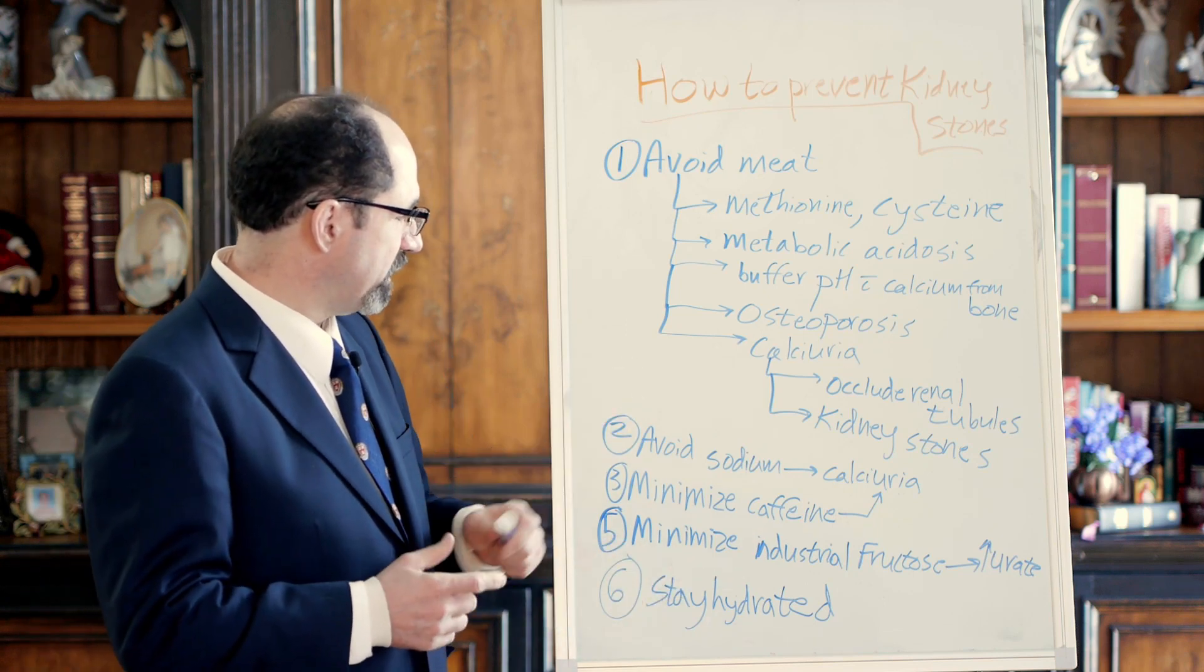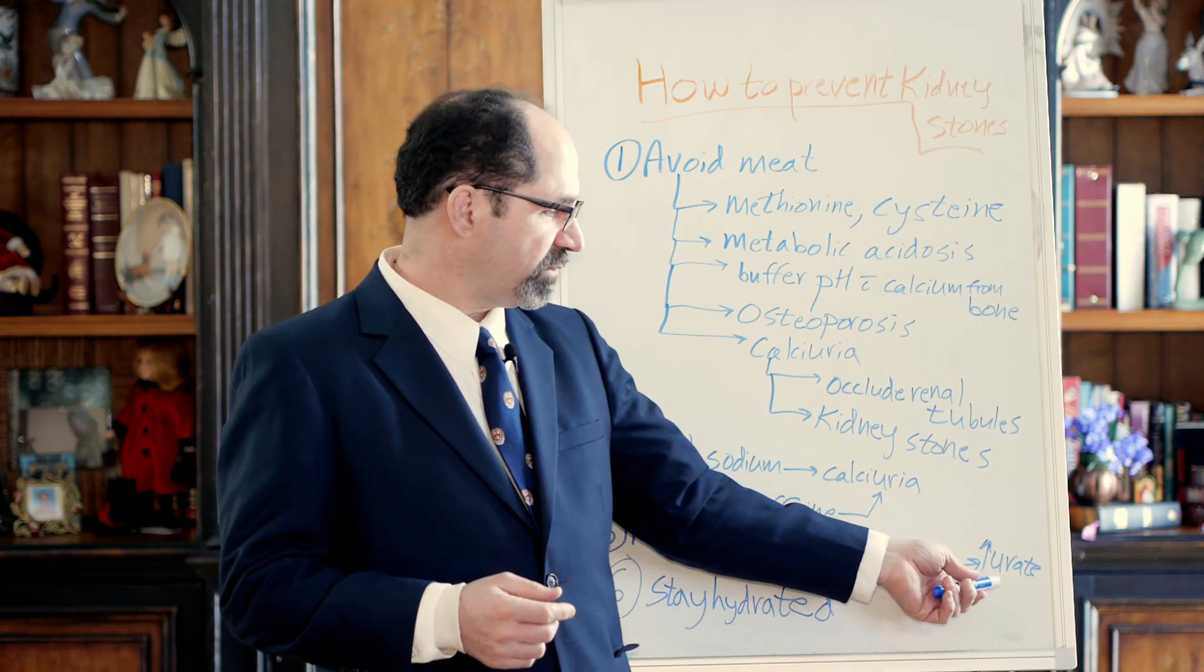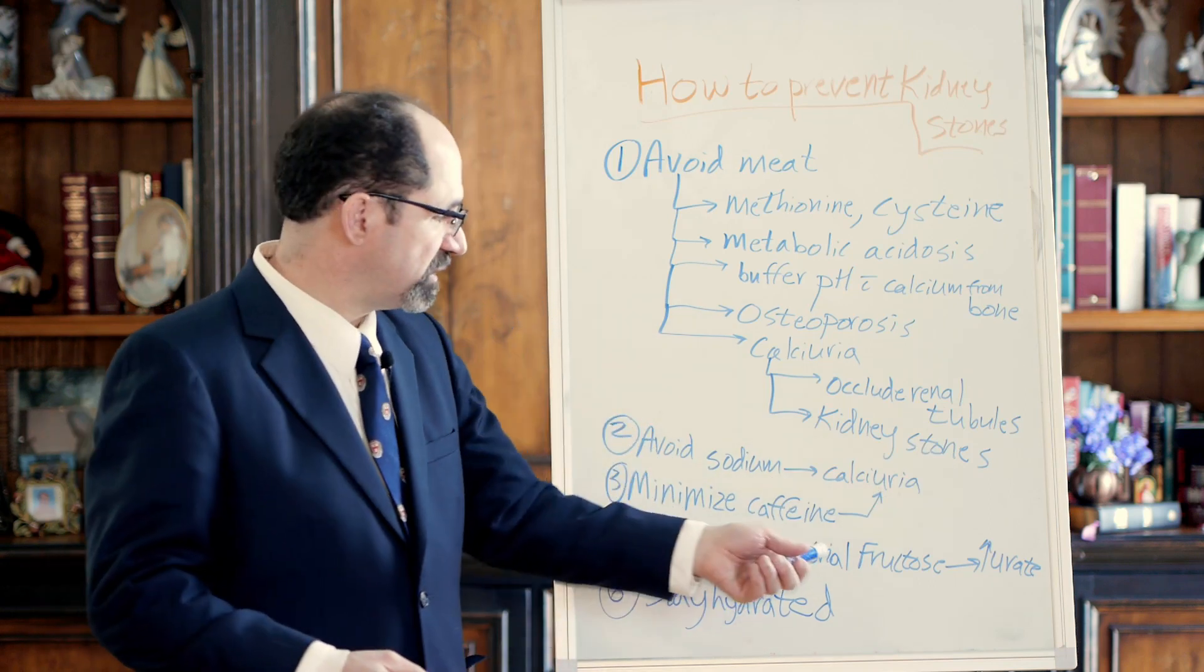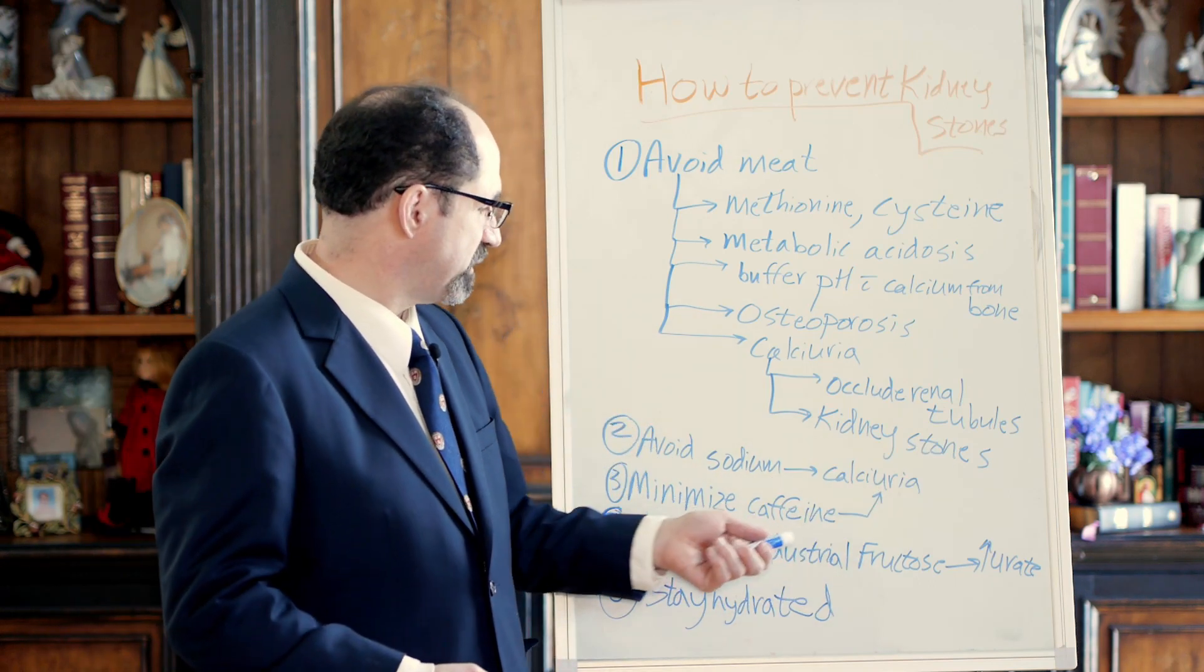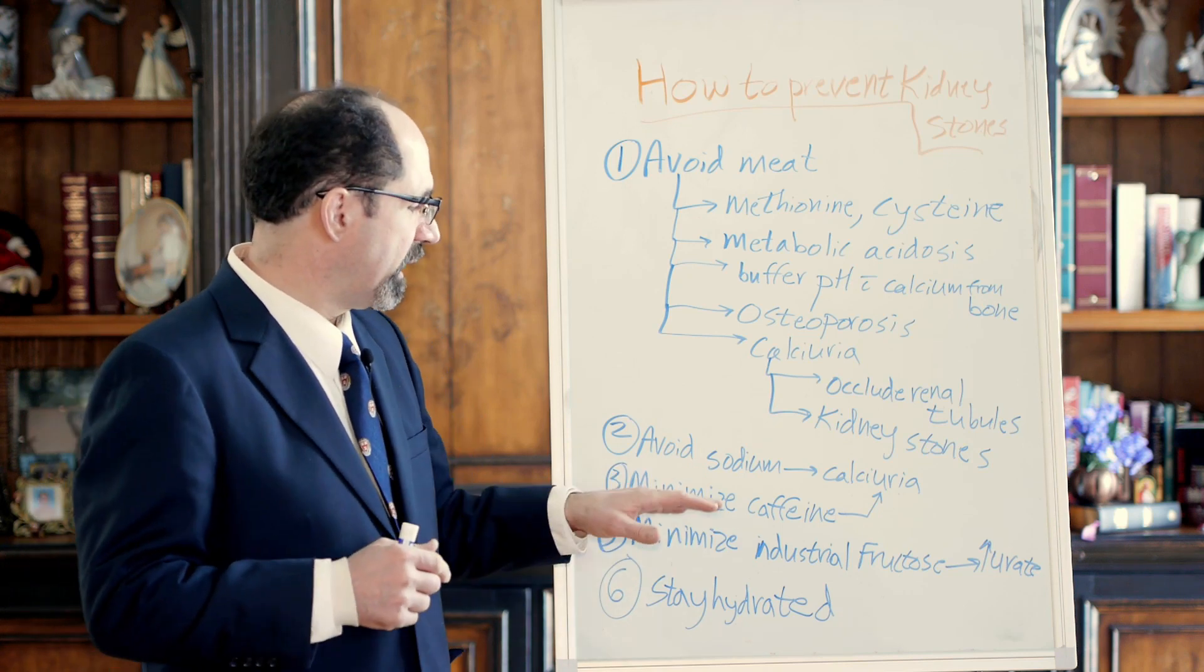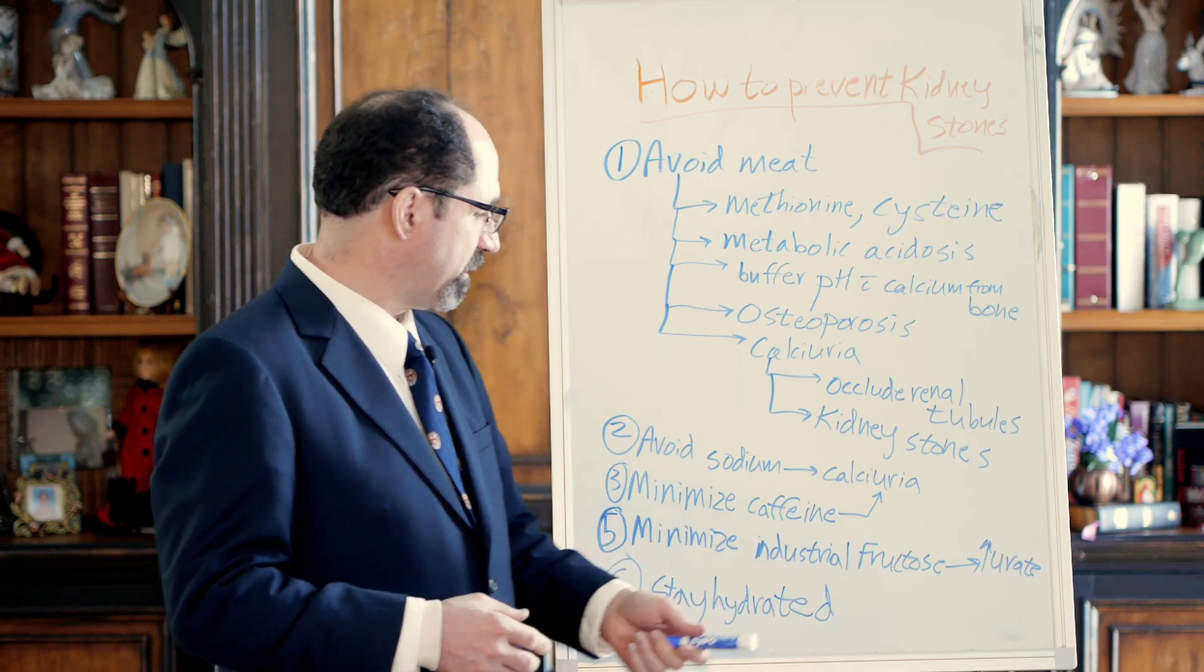I recommend avoiding your dietary intake of fructose, this industrial fructose, because it'll increase production of urate, uric acid, which can predispose to kidney stones. In addition, fructose causes increased absorption of sodium from the intestinal tract. It causes increased reabsorption of sodium from the kidney as well. So that's another thing I recommend to avoid.